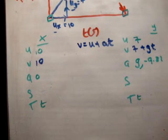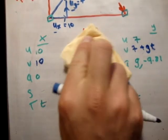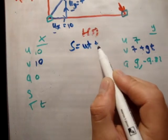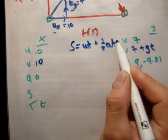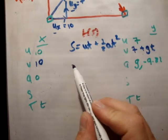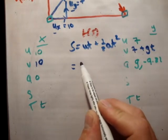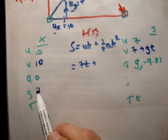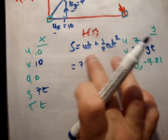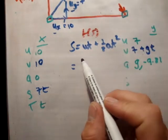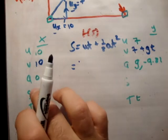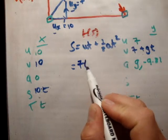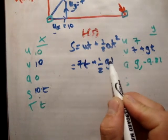Next, we're going to do s sub x and s sub y, the distances. So we're going to say s is equal to ut plus half a t squared. So s sub x, in the x direction, is equal to 7t plus half 0t squared. So it's actually, sorry, that should be 10t. And then s sub y is equal to 7t plus half gt squared.